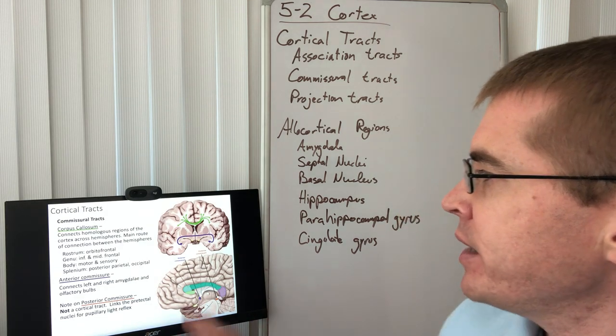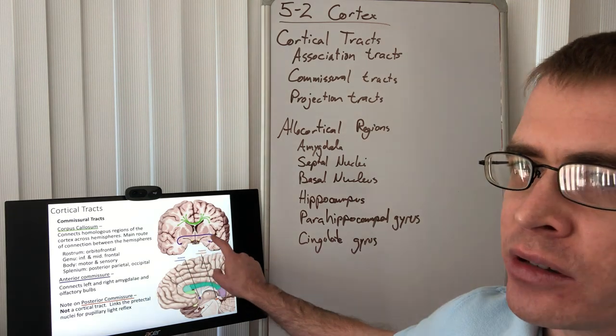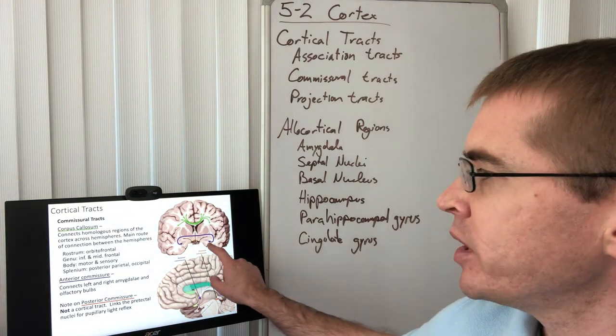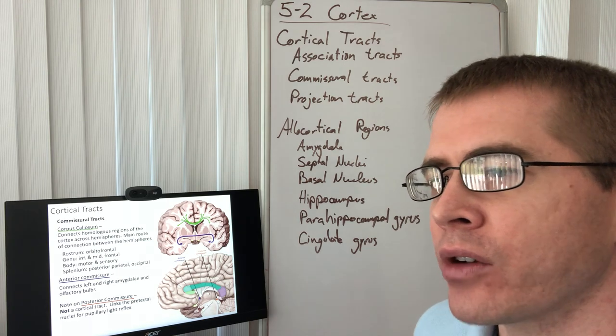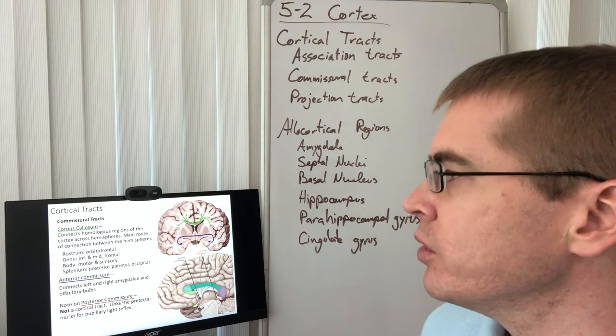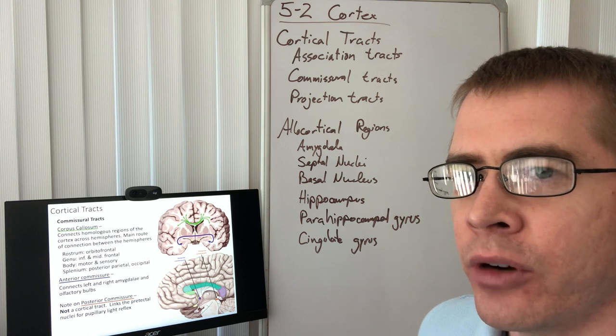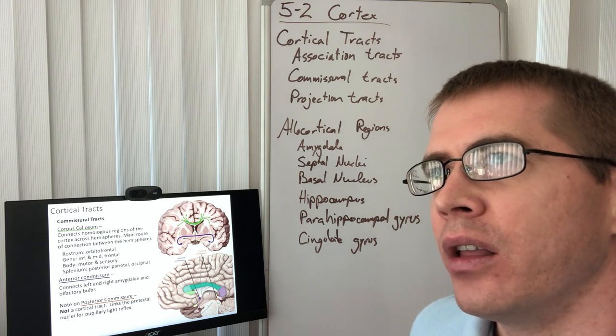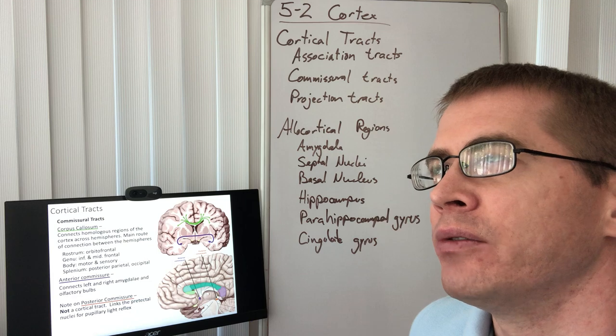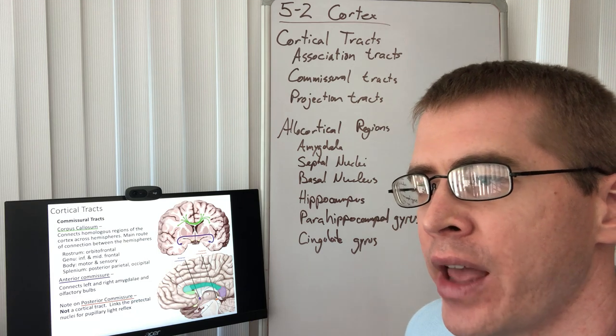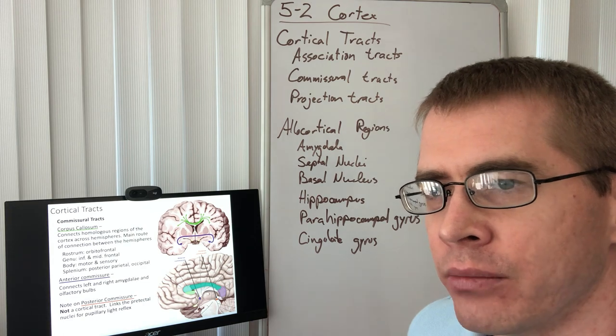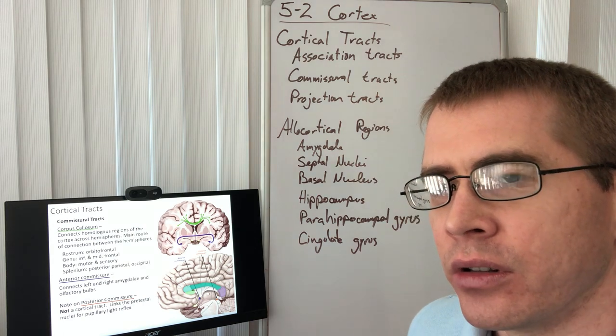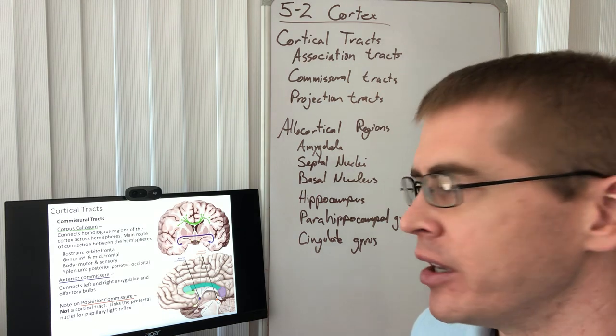And we also have the anterior commissure, which you can see here in the coronal view, connecting the two amygdalae together. And information from the olfactory bulb also travels through the anterior commissure. So our sense of smell is highly involved in both memory and emotion. So our olfactory bulb sends that information directly to the amygdala and the hippocampus.